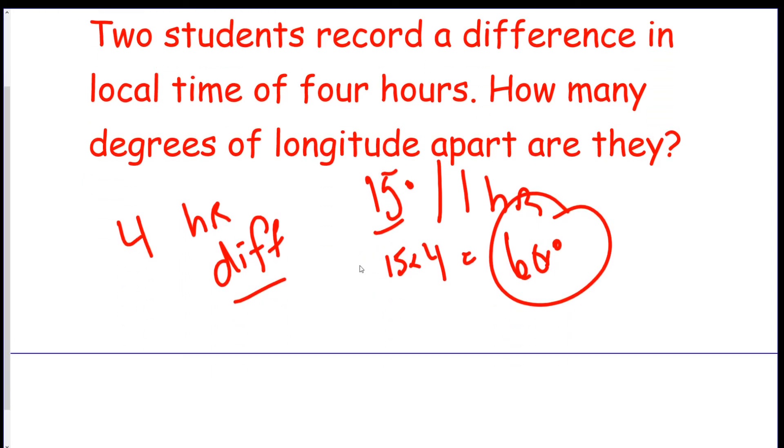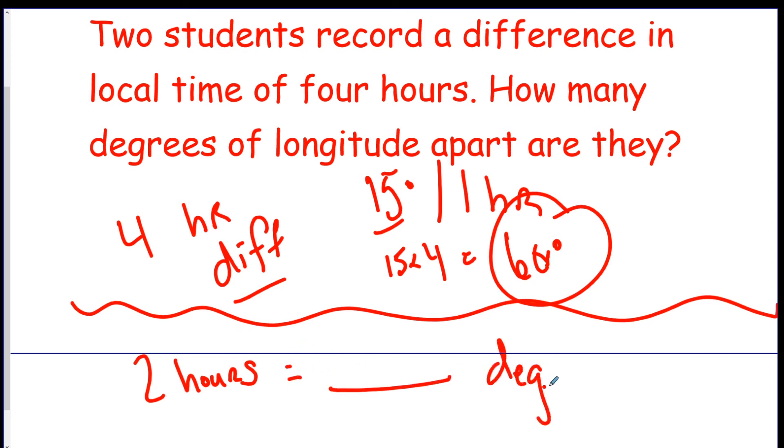All right, now you're going to do one. Let's do two students record a difference in time of two hours. So if they're two hours time apart, how many degrees are they apart? Remember, it's 15 degrees per hour, so you do 15 times two. So this would be 30 degrees apart.